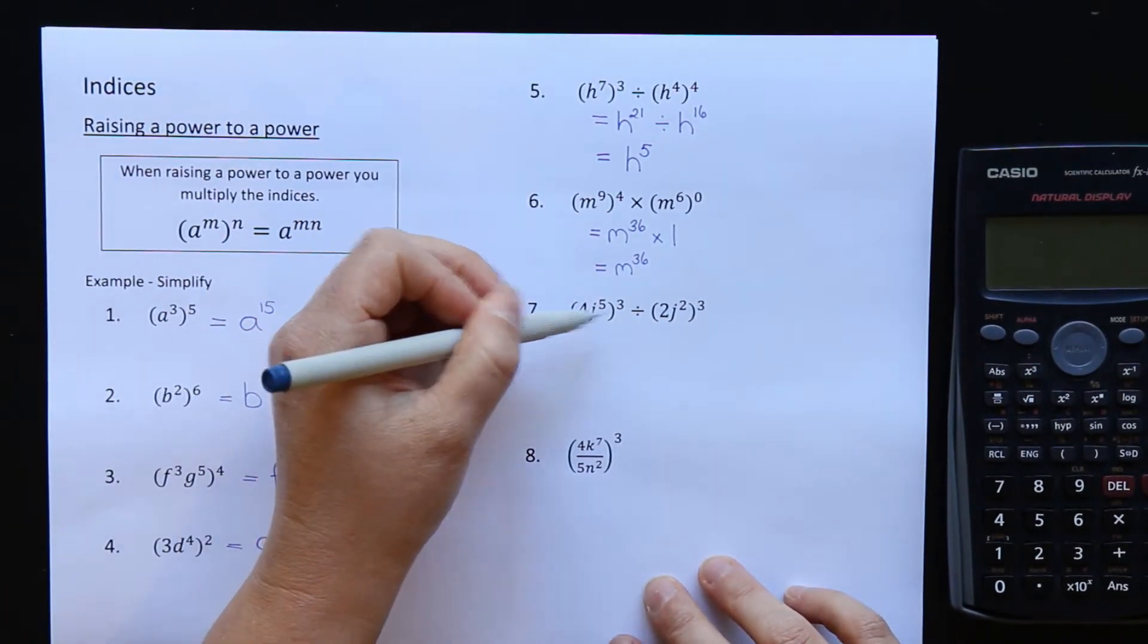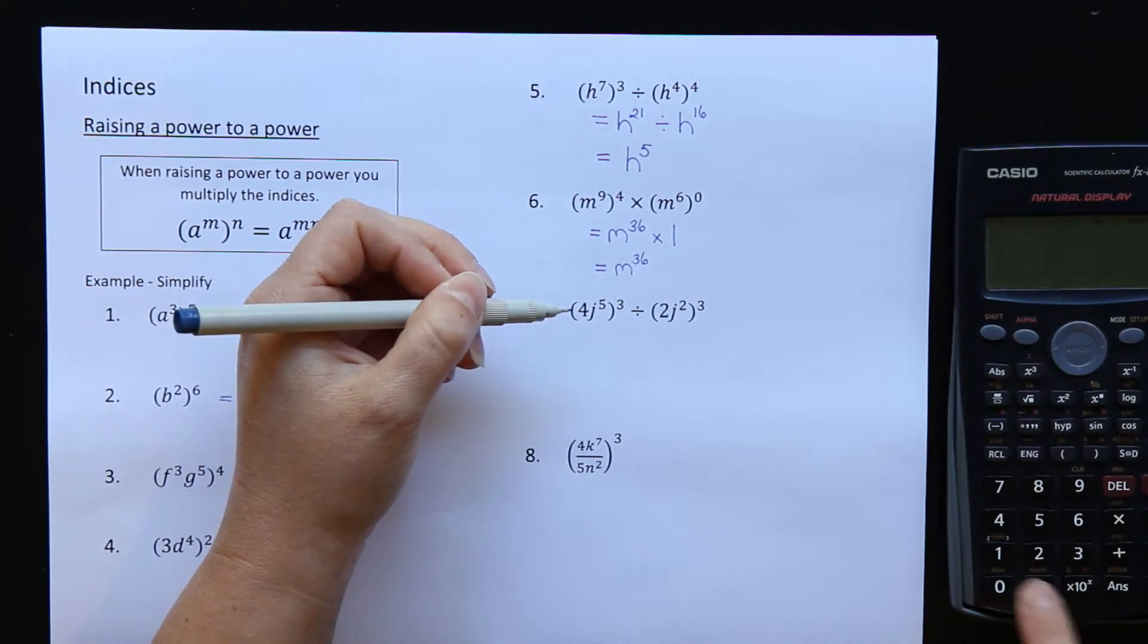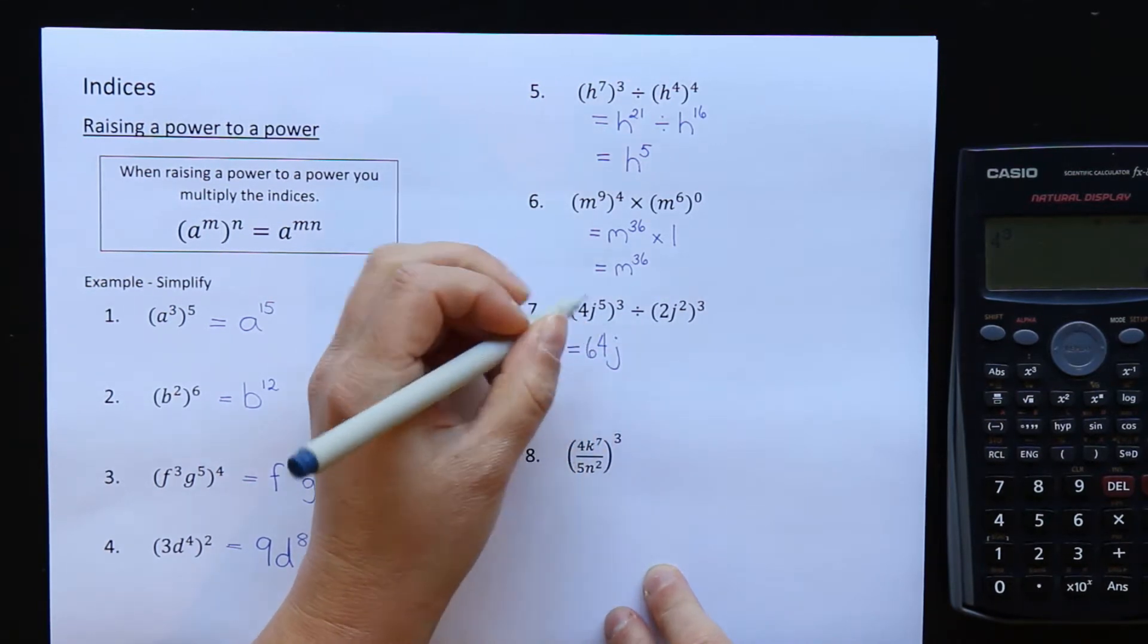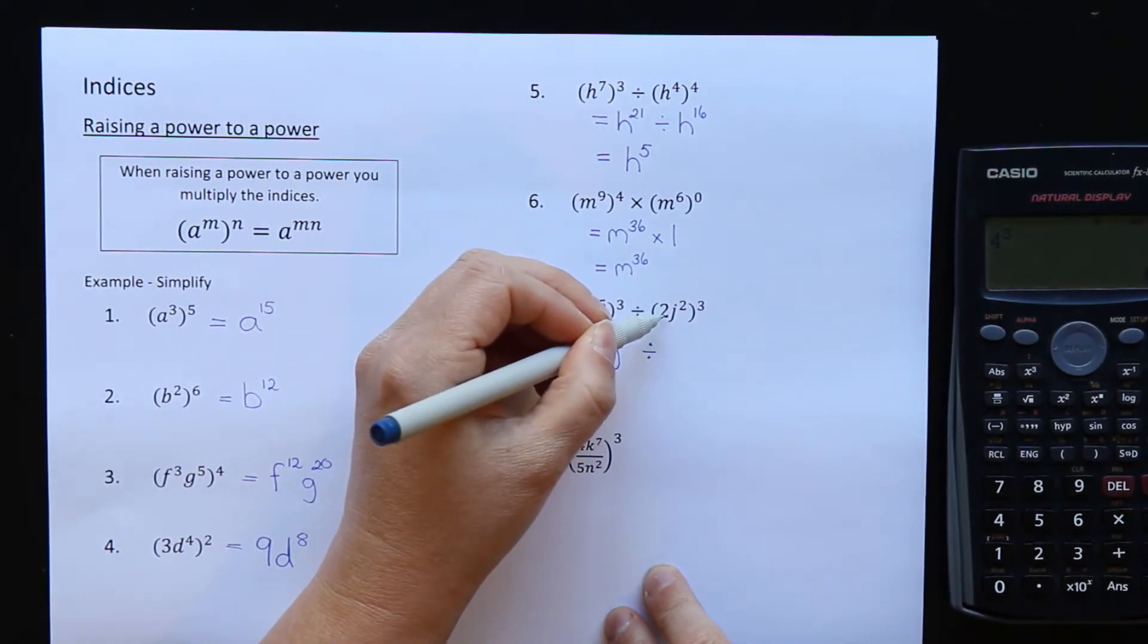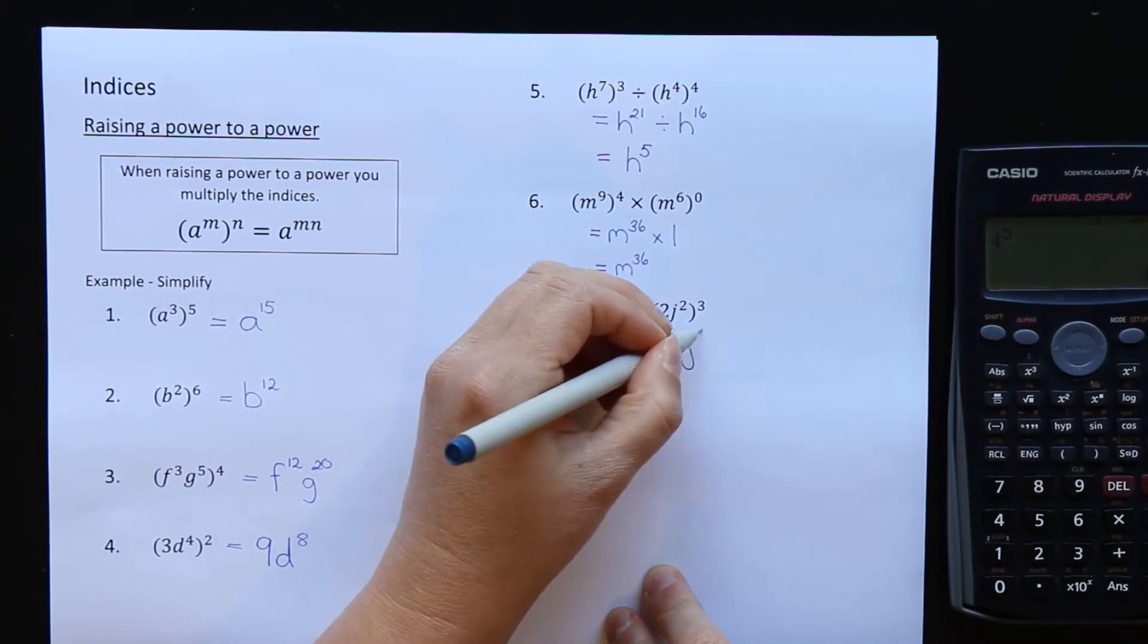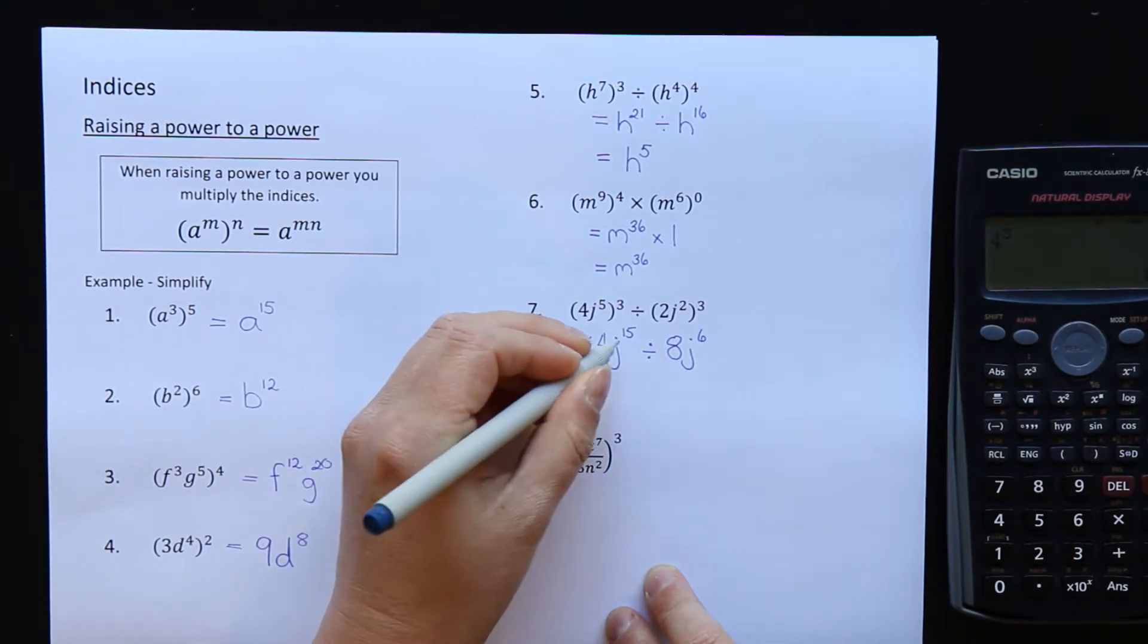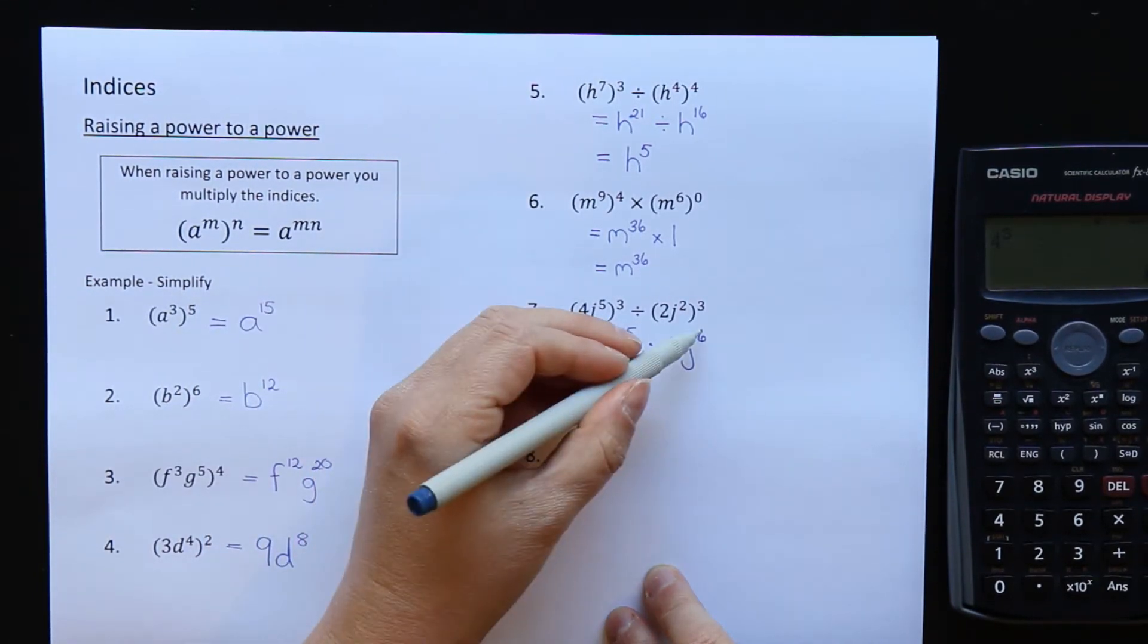Question 7. Okay, there's a few big numbers in here that I need to be careful with. So I need to do 4 to the power of 3. Okay, we might need a calculator for that. 4 to the power of 3 equals 64. So 64, j is the base, times the powers. 5 times 3 is 15. Then I want to divide. Okay, big number. So I need to do 2 to the power of 3 is 8. J is my base. 2 times 3 is 6. Now I want to divide these two things here. Divide the big numbers first. 64 divided by 8 is 8. J is going to be my base. And when you divide, you subtract the powers. 15 minus 6 is 9.